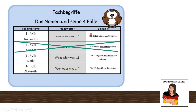Dritter Fall — Dativ. 'Wem oder was?' To whom? 'Der König gibt dem Ritter ein Schwert.' Now you can see the sentence is even longer. Der König, the king, gives a blade to the knight. 'To the knight' is the object in Dativ. To whom is he giving the blade? To the knight. So the nominative became the king — before it was the knight, but now it is the king.